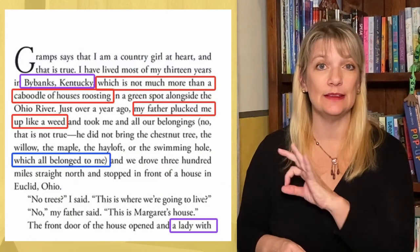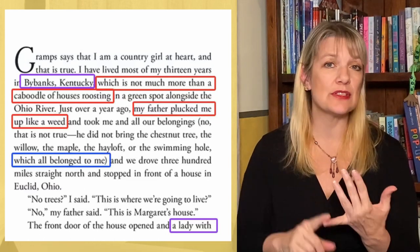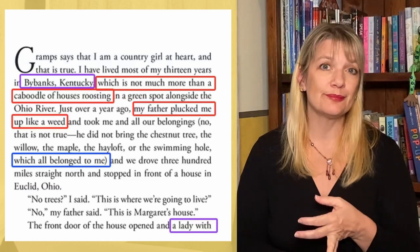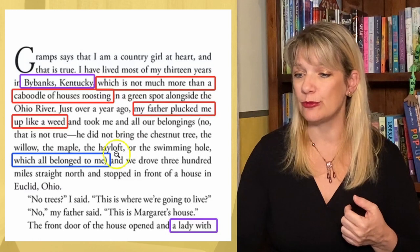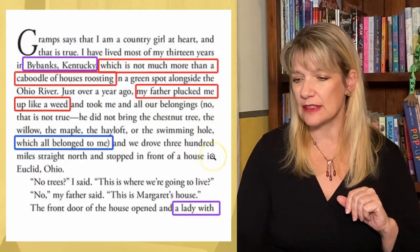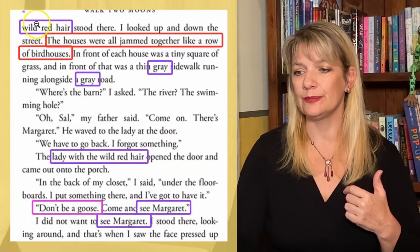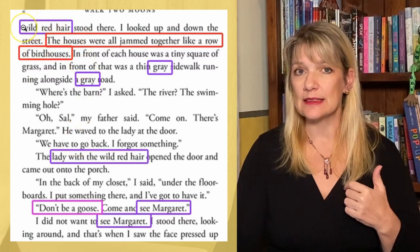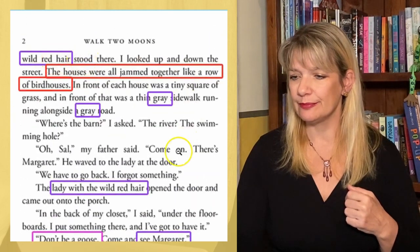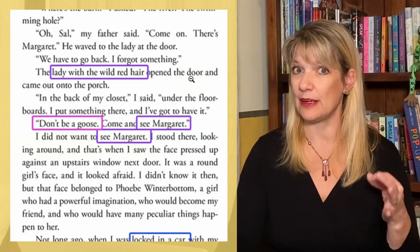One poetic technique that Sharon Creech uses a lot in this book — and that I just adore — is repetition, and she uses it so well: to give us more insight into the emotional state of the characters, to help create a rhythm, and also for humor. We start with a lady with wild red hair. Our protagonist does not care for this lady, and she says it a lot: 'A lady with wild red hair stood there,' then again, 'the lady with the wild red hair.' She knows her name but doesn't call her by it, which already tells us something about her attitude.